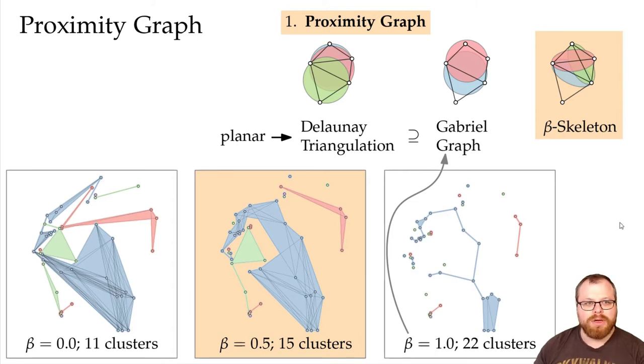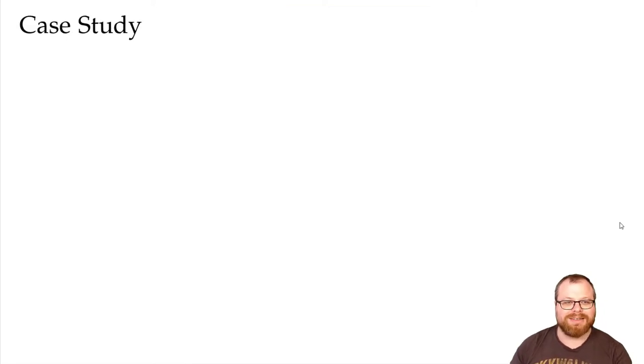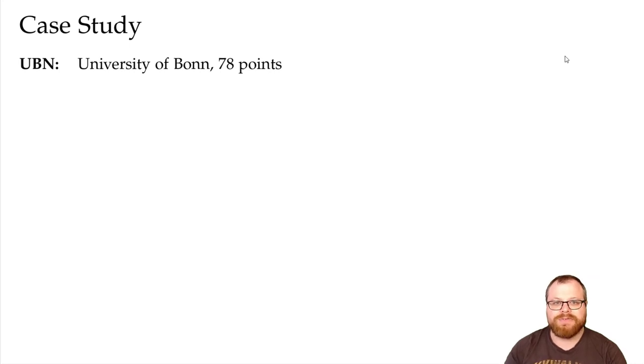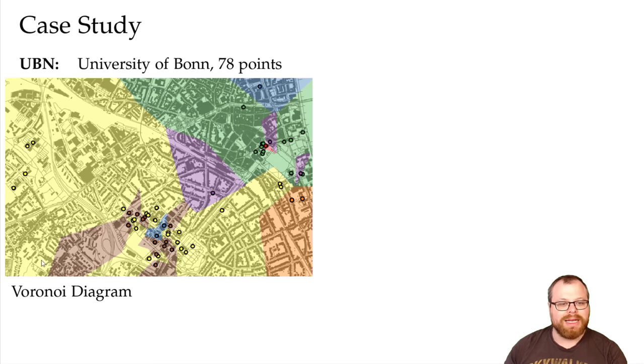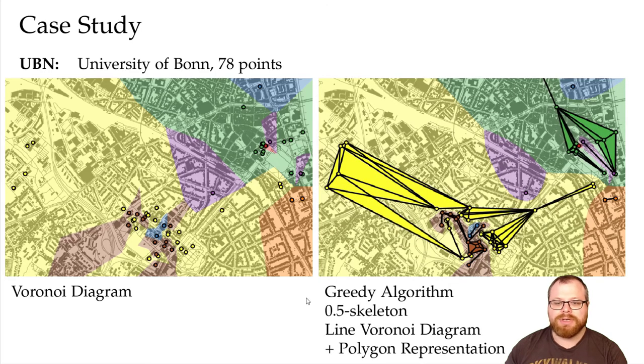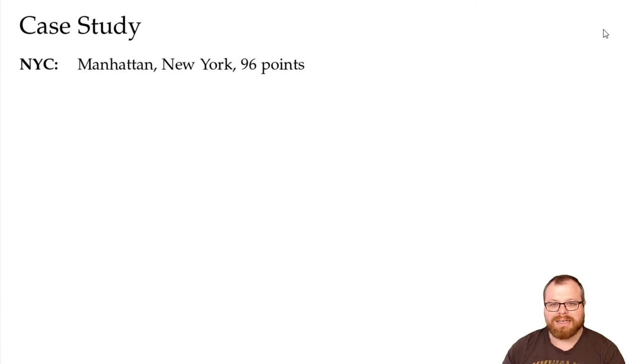We conducted a case study for our algorithm on three datasets. The first set contains 78 points that represent the facilities of University of Bonn where the categories are the departments. Although most of the yellow and brown facilities are close to the main campus, in a simple Voronoi diagram they are split into different regions, while in our approach they form one contiguous one.